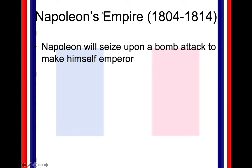Napoleon is going to seize upon a bomb attack and make himself Emperor. This is going to be actually really similar to what Hitler will be doing. When I talk about Napoleon, I want you to keep in mind the dictators we're going to be seeing in the 20th century, especially during the 1930s with Nazi Germany, fascist Italy, and the Communist Soviet Union.